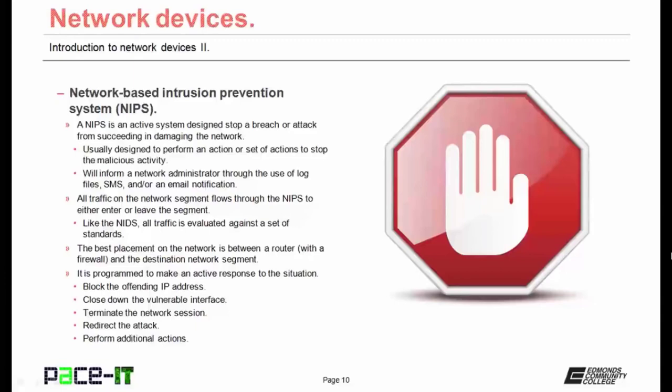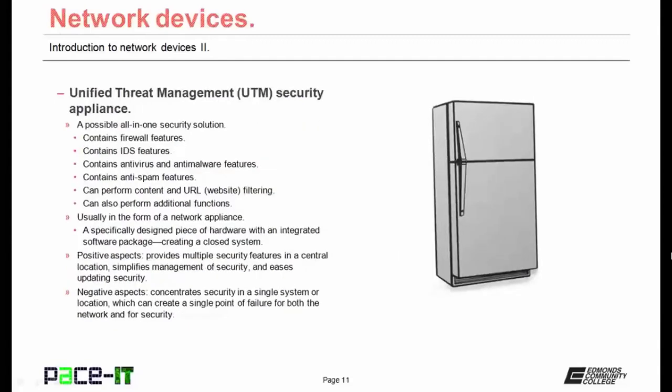The best placement on the network is between a router, which hopefully has a firewall, and the destination network segment. The NIPS is programmed to make an active response to the situation. Some of those responses could include blocking the offending IP address, closing down the vulnerable interface, terminating the network session, or in more advanced systems, redirecting the attack to a honey net. There are additional actions it can perform depending upon how the NIPS is programmed.